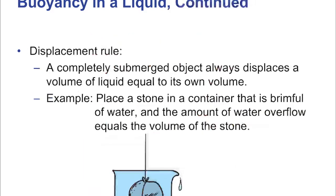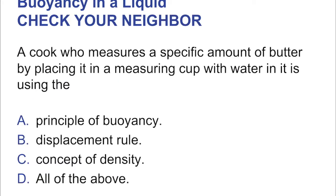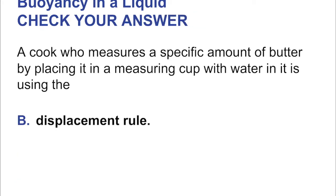The displacement rule: a completely submerged object always displaces a volume of liquid equal to its own volume. Place a stone in a container brimful of water and the amount of water that overflows equals the volume of the stone — that's a great way to measure volume for irregular shapes where you can't use a geometric formula. A cook who measures a specific amount of butter by placing it in a measuring cup with water is using the displacement rule.